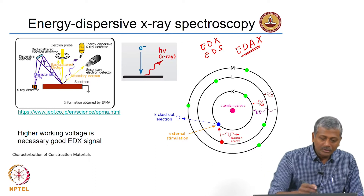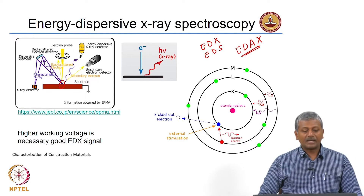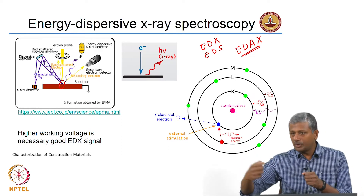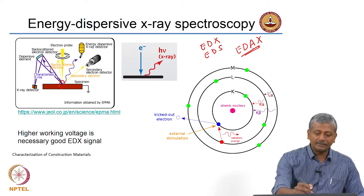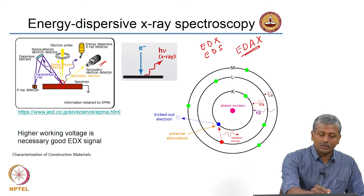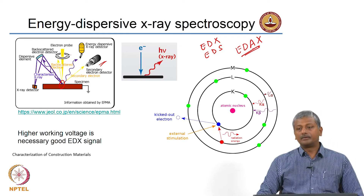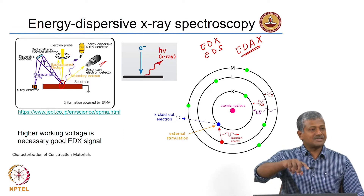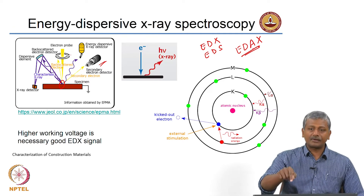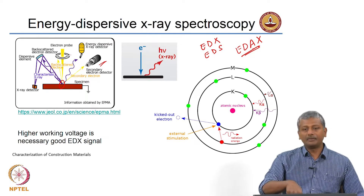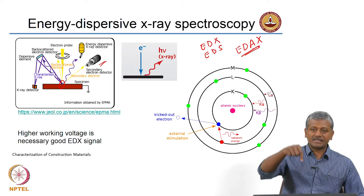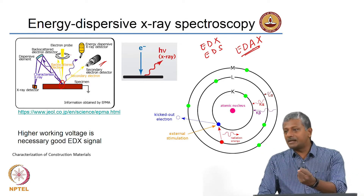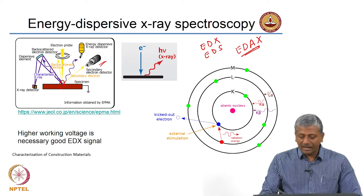The electron beam strikes the sample. Secondary electrons are the outer-shell electrons that are dislodged — low-energy electrons collected by the secondary detector. Backscattered electrons travel straight up and are collected by the annular ring placed around the objective lens. The key difference: secondary electrons come from atoms in the sample, while backscattered electrons are the same incident electrons reflected back.